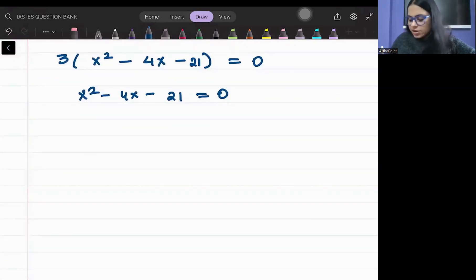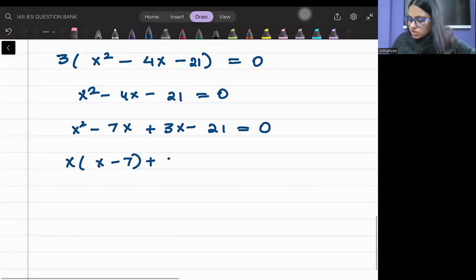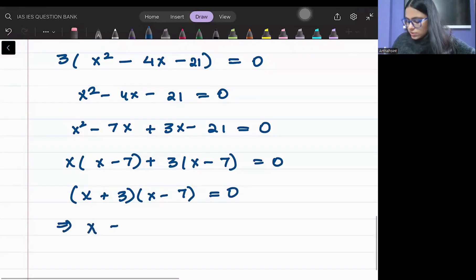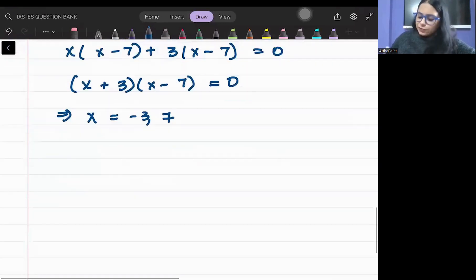21 is 7 into 3. So X squared minus 7X plus 3X minus 21. Keep looking if I am just doing the right calculation. X(X minus 7) plus 3(X minus 7) is 0. So (X plus 3)(X minus 7) is 0. So X will be minus 3 or 7. Quantity cannot be negative. So therefore X will be 7.